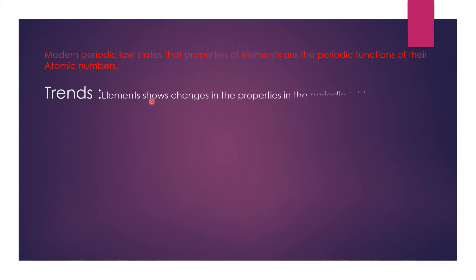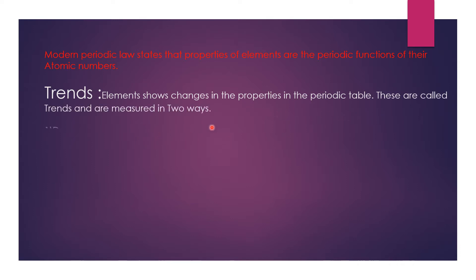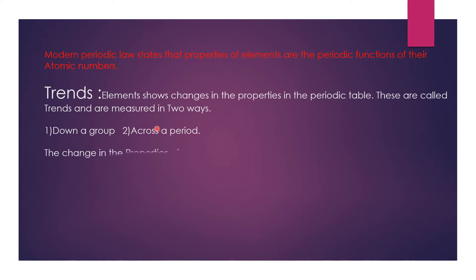Now, what are trends? Elements show changes in properties in the periodic table. These are called trends and are measured in two ways. One is down a group, and the second one is across a period.